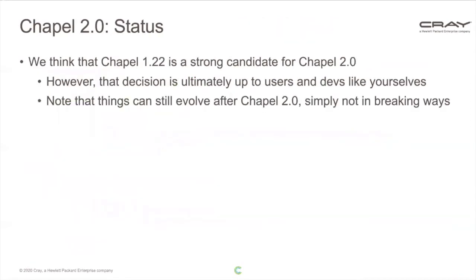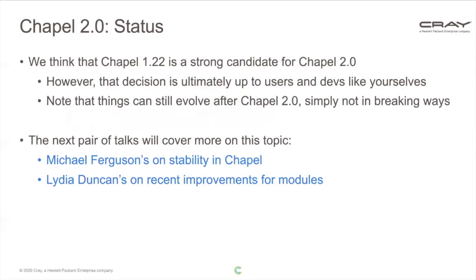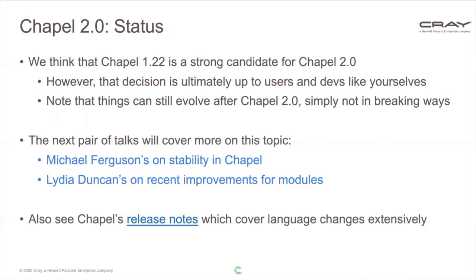At this point, we think Chapel 1.22 is a very strong candidate for Chapel 2.0. Ultimately, that decision is up to users and developers like those attending CHU or in the community. It's important to note that after Chapel 2.0, things can still evolve and improve in the language and library — simply not in breaking ways. The goal is to make existing code continue to work while still improving the language. Michael Ferguson will be talking about stability in the language, and Lydia Duncan will cover improvements to modules and namespaces.